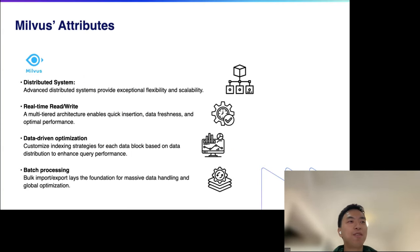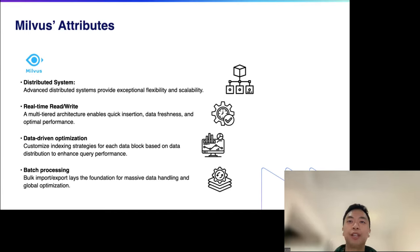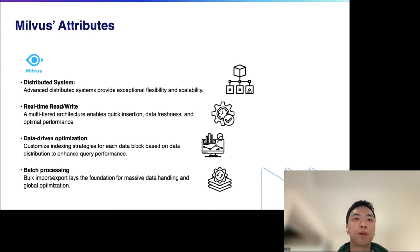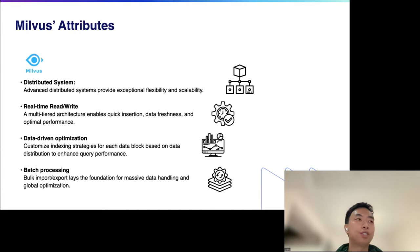A vector database combines vector search algorithms and database features — FAISS and Milvus are similar to the relationship between a storage engine and MySQL. Milvus's distributed architecture allows you to handle huge amounts of data. Milvus has multiple-level insertion structures that balance data freshness and efficiency at the same time. It's also equipped with many data-driven optimizations that tune performance based on how the data is distributed, and batch processing capability to operate on massive data with global optimization.